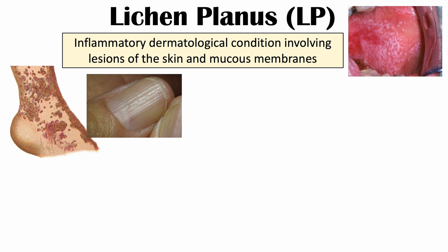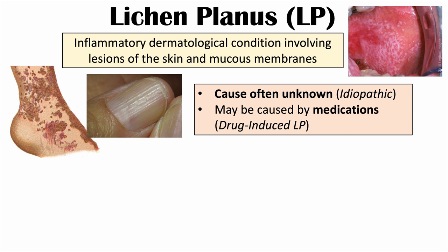Lichen planus is an inflammatory dermatological condition involving lesions of the skin and the mucous membranes, including inside the mouth. Certain parts of the body on the skin can be affected, and even the nails can be affected. The cause of this condition is often unknown, meaning it is often idiopathic, but some causes can be medications.